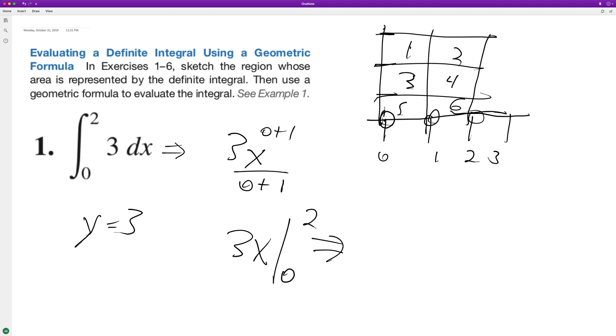So what we have is 3 times 2 minus 3 times 0. So we end up with 6 minus 0, which is equal to 6, which is originally what I stated up there.